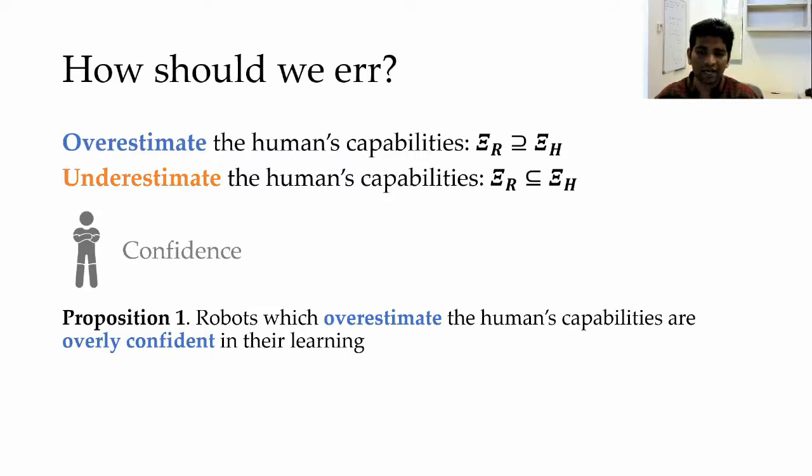Our first theoretical insight is that robots that overestimate the human's capabilities are overly confident in their learning. Returning to the coffee example, what this means is that if the robot overestimates our capabilities and we show a non-ideal demonstration where we spill coffee, the robot becomes confident that we are optimizing for spilling. This is because the robot overestimated our capabilities and thinks we could have chosen a demonstration where we did not spill coffee if that's what we wanted the robot to learn.